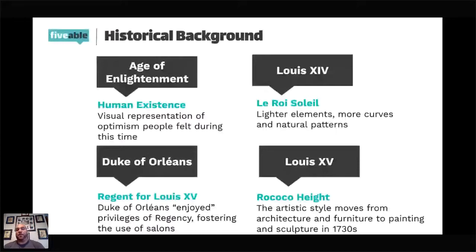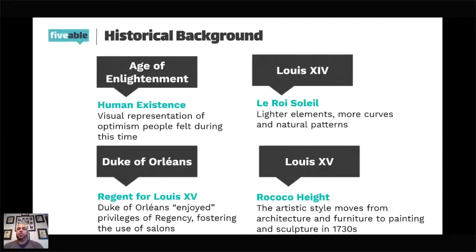Then we have the Sun King, Louis XIV, who at the beginning of his reign was very Baroque, very much in the Catholic style. But as his reign went on — and he had a very, very long reign — he changed and started to bring in Rococo styles: those curves, the moving water, the natural patterns. Upon his death, however, is where it was going to reach its height, and that is with the Duke of Orleans.